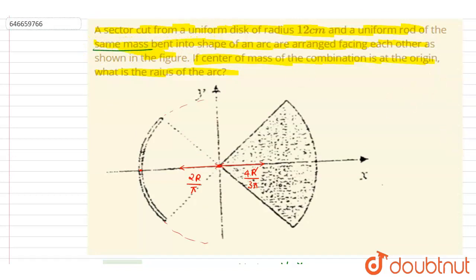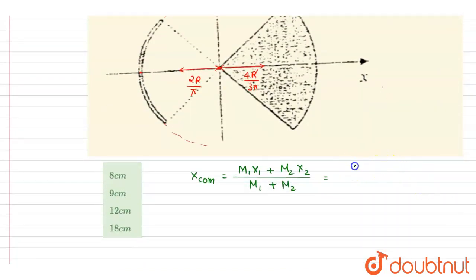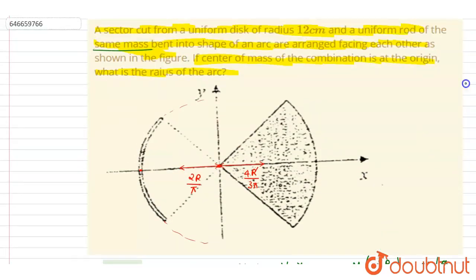If you see, it's already given in the question, same mass. So they are having the same mass m and m. And if you see, the center of mass of this is minus, and center of mass of this is plus. So if you see, the r dash here is 12 centimeter, so it will be 4 into 12.